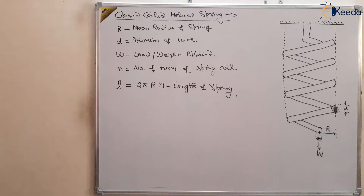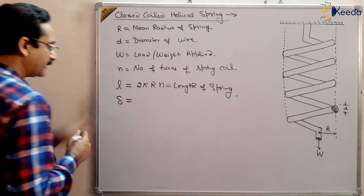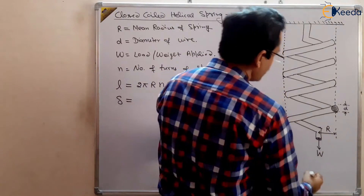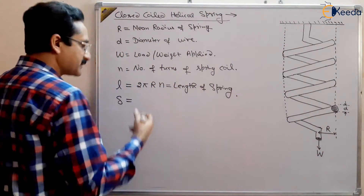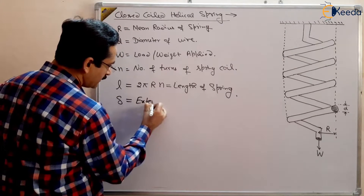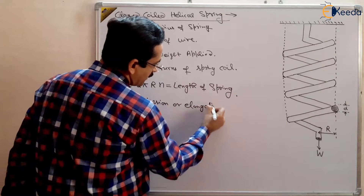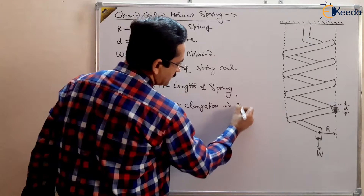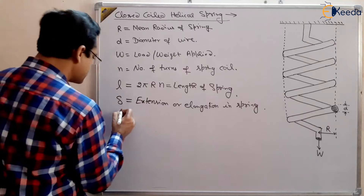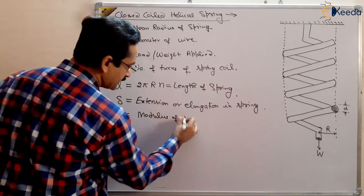There is another term used in closed coil helical springs: delta. When we apply an external load W, there is extension in the spring. Delta is the extension or elongation of the spring. There is also G, which is the modulus of rigidity.